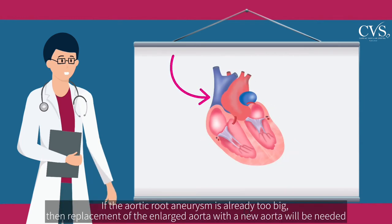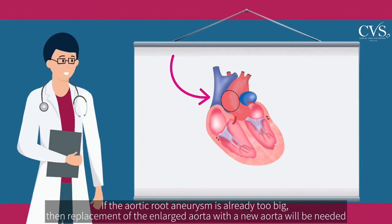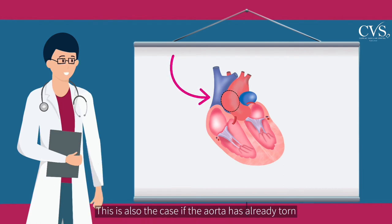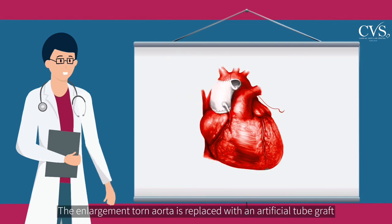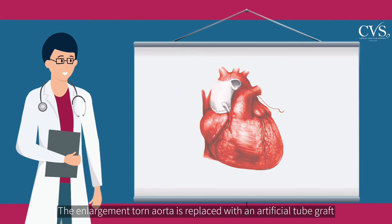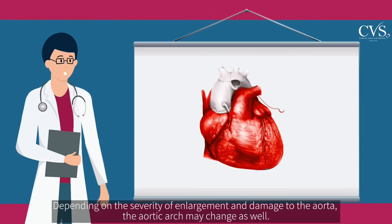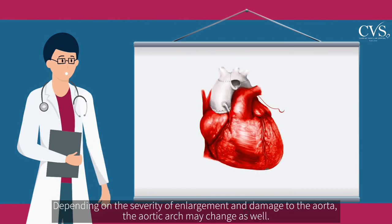If the aortic root aneurysm is already too big, then replacement of the enlarged aorta with a new aorta will be needed. This is also the case if the aorta has already torn. The enlarged or torn aorta is replaced with an artificial graft. Depending on the severity of enlargement and damage to the aorta, the aortic arch may need to be changed as well.